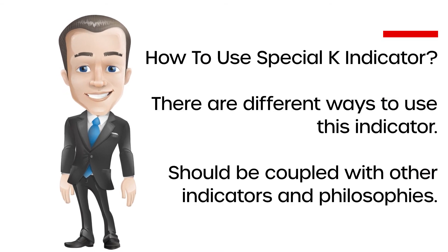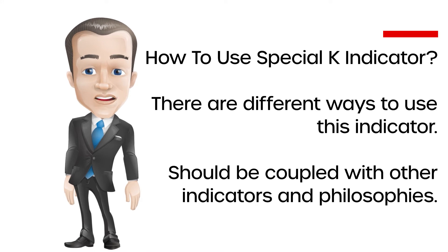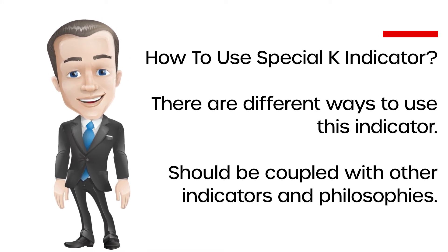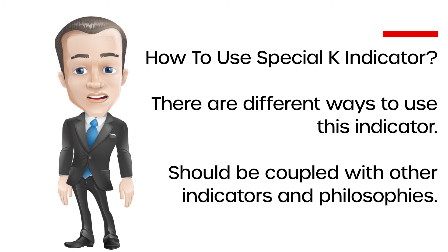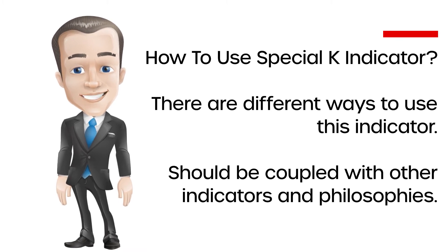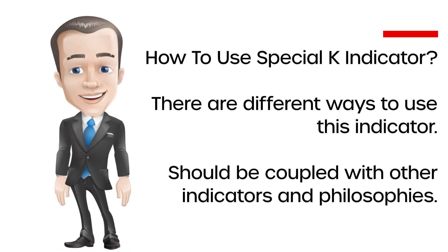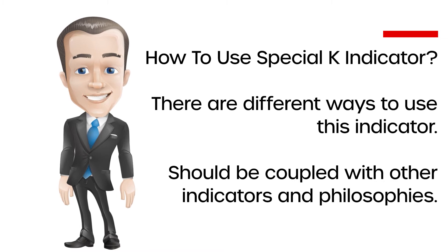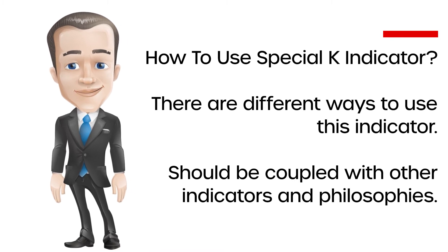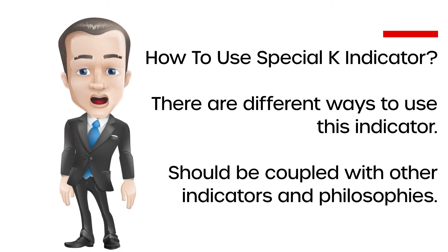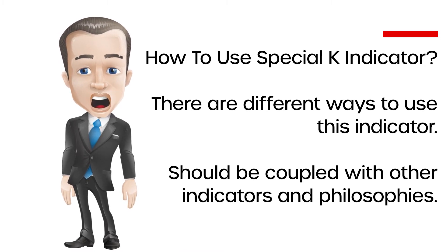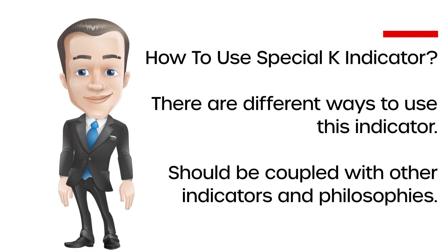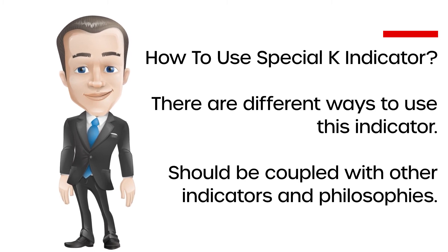How to use the Special K Indicator? The easiest way to analyze and understand it involves the many different ways to apply this indicator. Templates can apply it to any security with four years of historical data, but one indicator does not make a strategy — it should be coupled with other indicators and philosophies. Any momentum indicator does not have a great win-loss percentage on its own, but gives you evidence reflecting the best direction of markets, sectors, or individual securities.